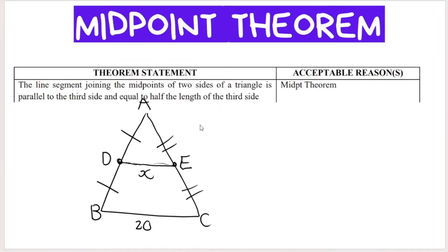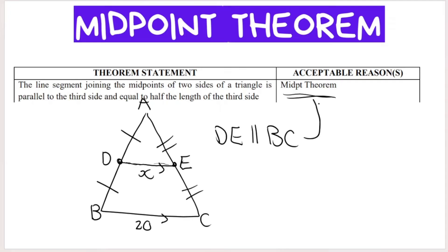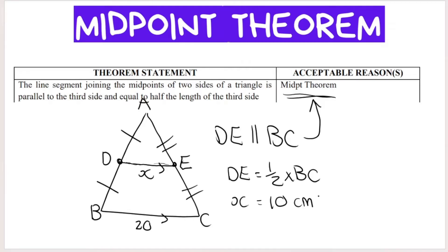For example, if I give you triangle ABC where D is the midpoint of AB so AD equals DB, and E is the midpoint of AC so AE equals EC, then therefore we can say that DE is parallel to BC — reason: midpoint theorem. We can therefore also conclude that DE is equal to half of BC, so if BC is 20, then DE, which is X, equals half of 20, which is 10 centimeters. My reason again would be midpoint theorem.